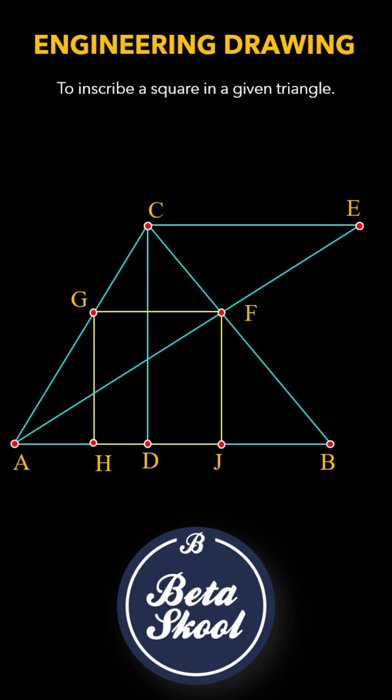The quadrilateral HJFG that you obtain is the required square inscribed in the triangle, and that's it. We've successfully drawn a square inscribed in a given triangle.